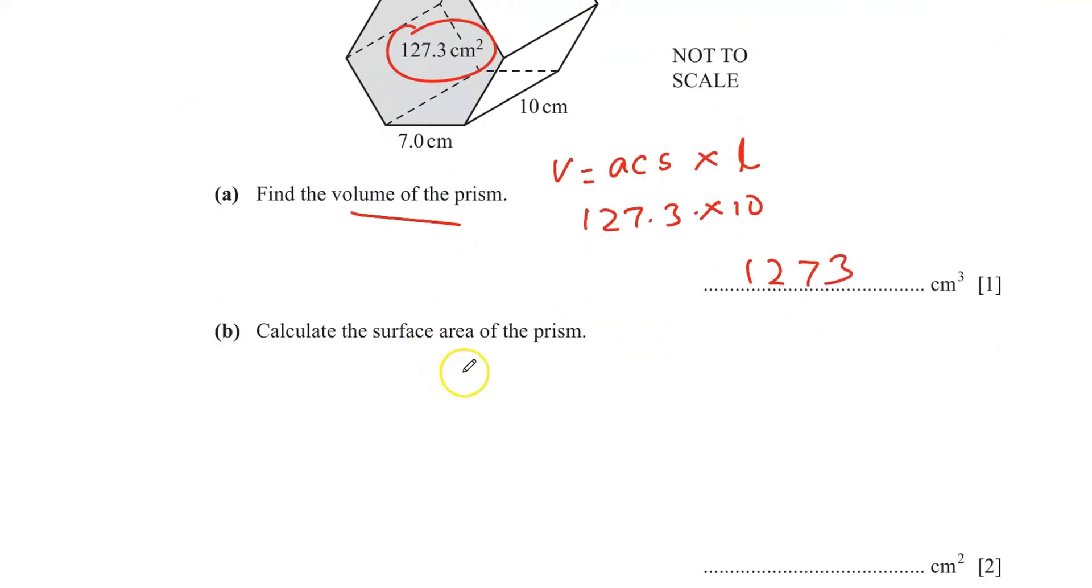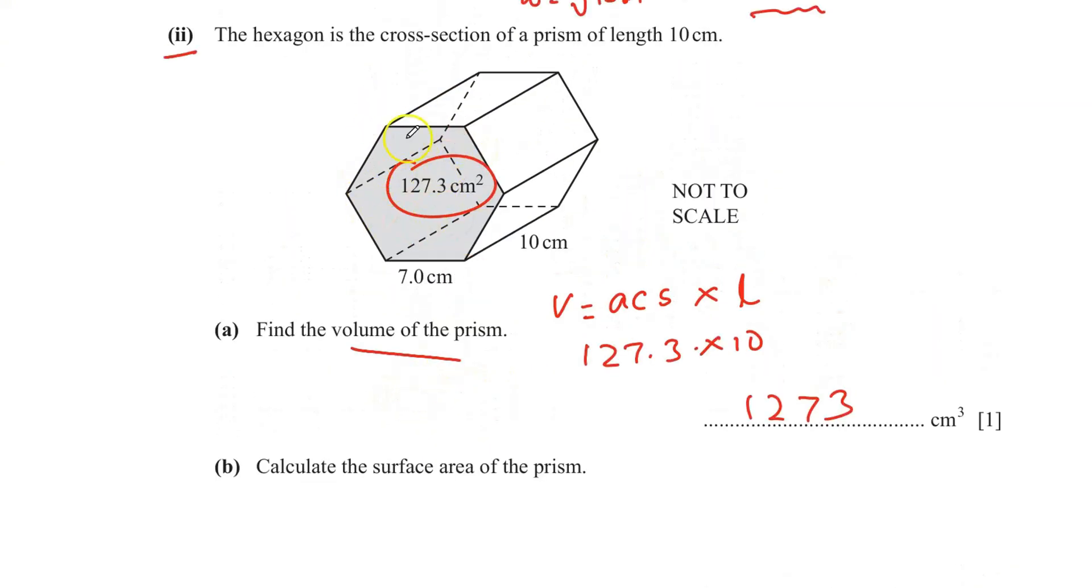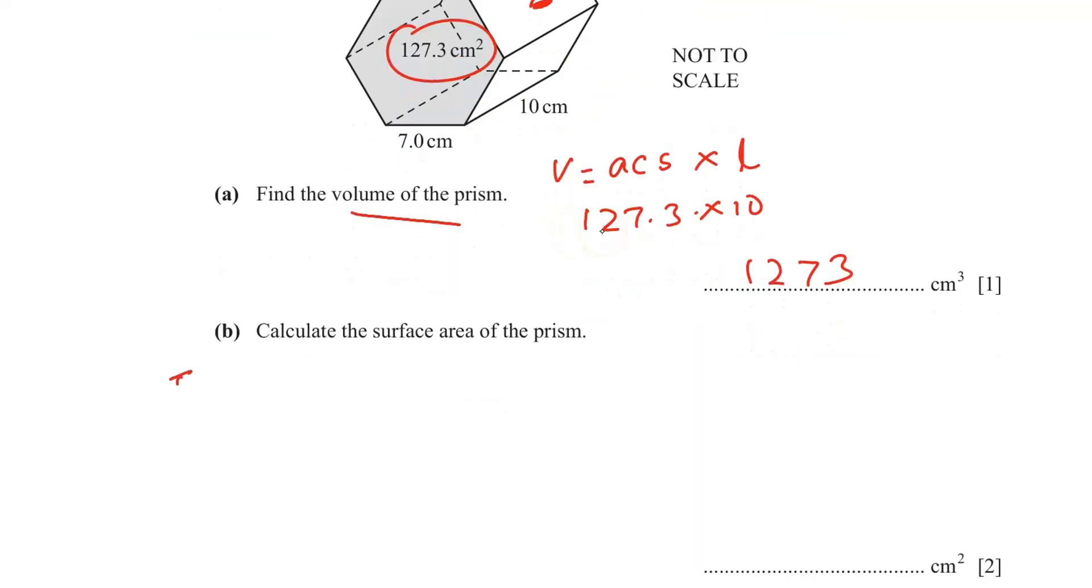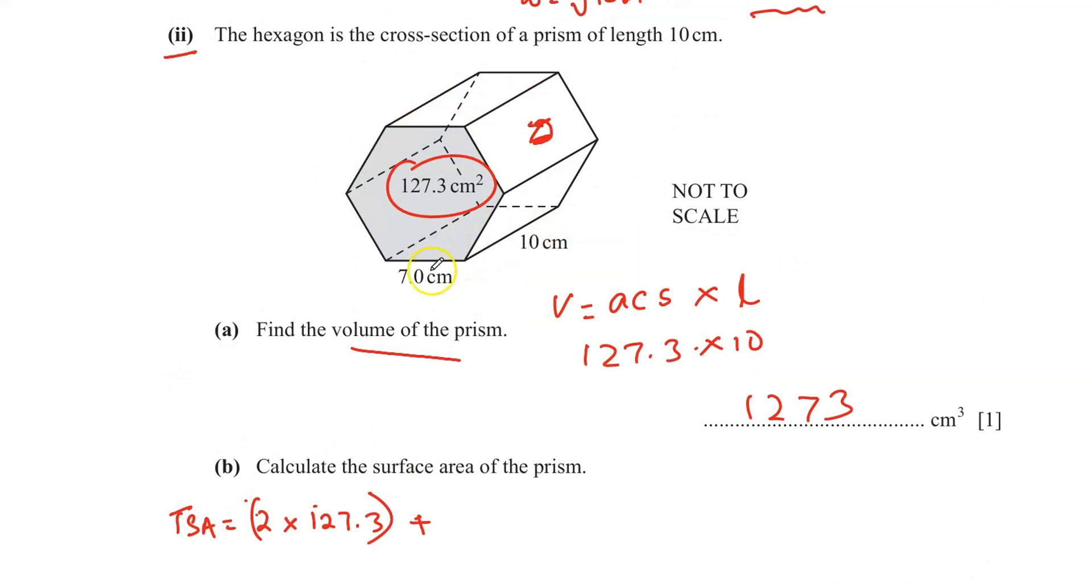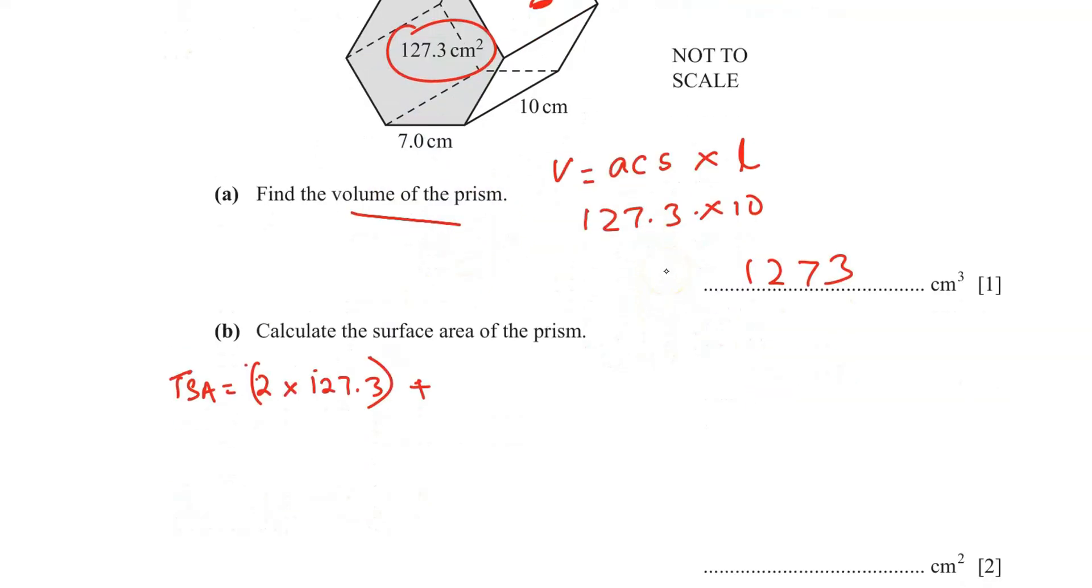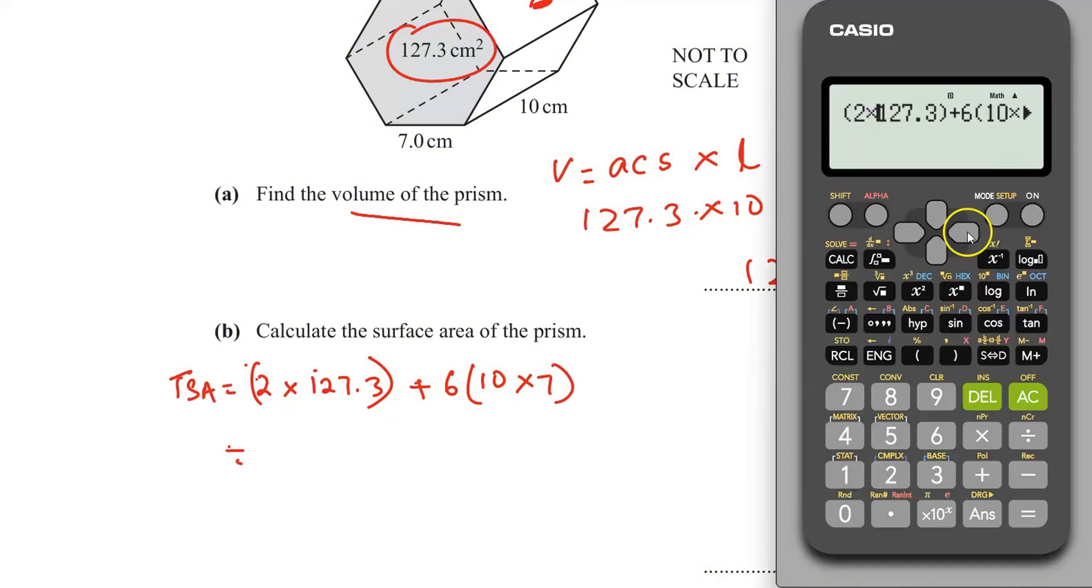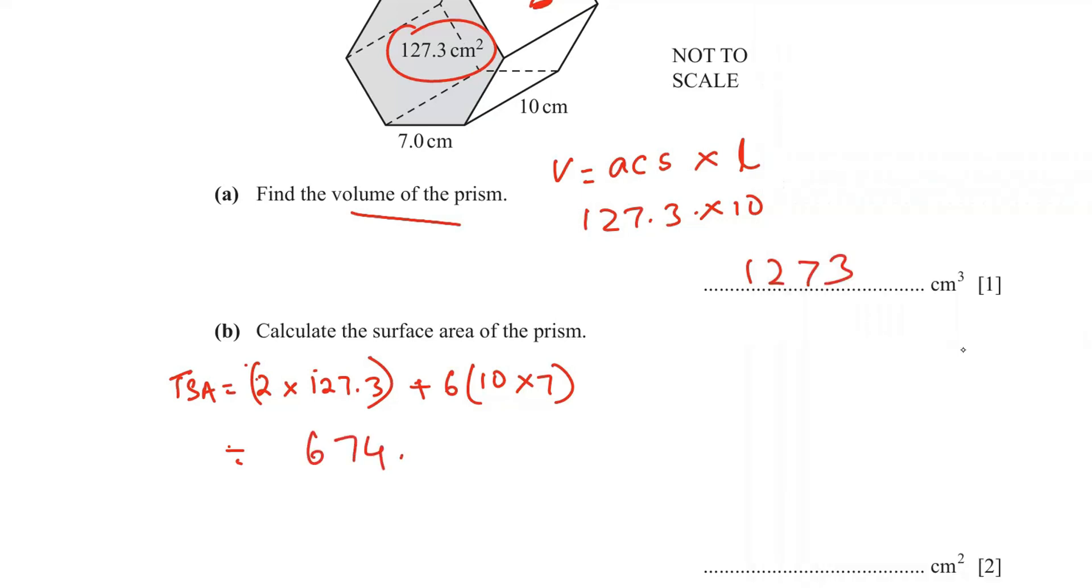And part b, calculate the surface area of the prism. So we already have the area of one of the faces and there is at the back identical face over here. We just have to multiply that by 2. Total surface area is 2 times 127.3 plus, let's put that separately. Area of rectangle and there are 6 of those. 6 times 10 times 7. Area of rectangle is length times width. 10 times 7. That is equal to 674.6. 674.6.